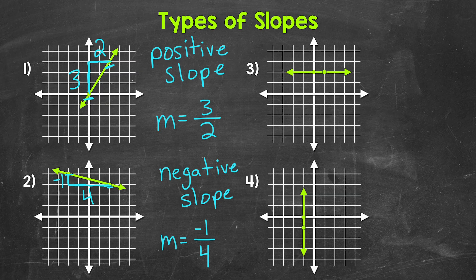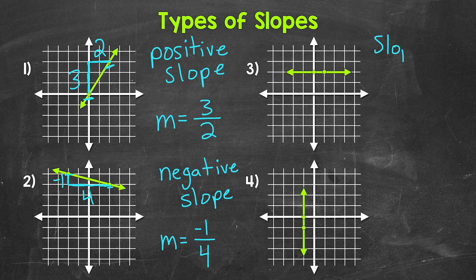You'll notice the difference between positive slope and negative slope: positive slope moves upward from left to right, and negative slope moves downward. Moving on to number three, we have a horizontal line. There's no vertical change here at all — the line isn't moving upward or downward, just straight across. The Y values stay the same as the X values increase. This is an example of a slope of zero. Any horizontal line has a slope of zero.